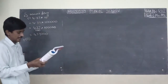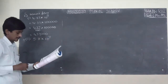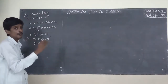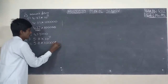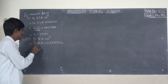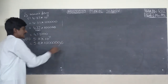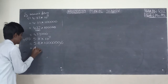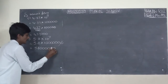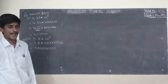Second one: 5.8 into 10 to the power of 7. 5.8 into 10 to the power of 7 means 1 after you will take 7 zeros. After decimal point, 1 digit is there. So you will take 1 zero. Left 6 zeros. So 5.8 gives 58,000,000.